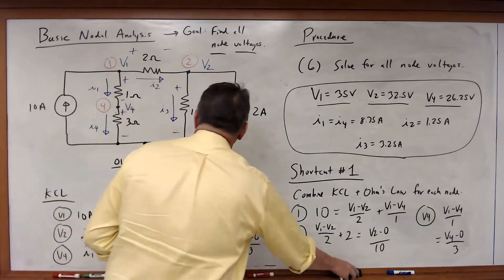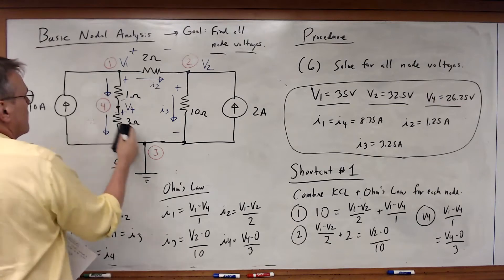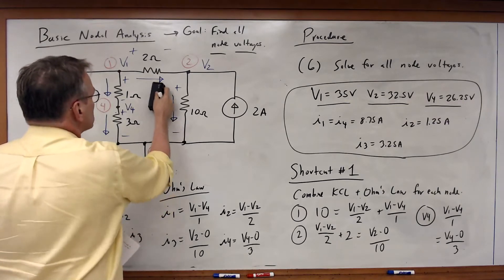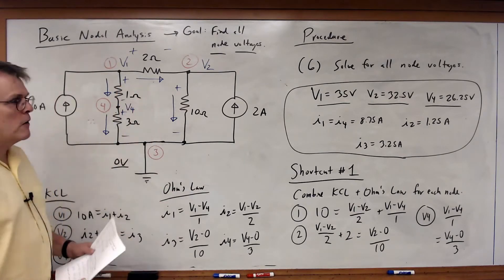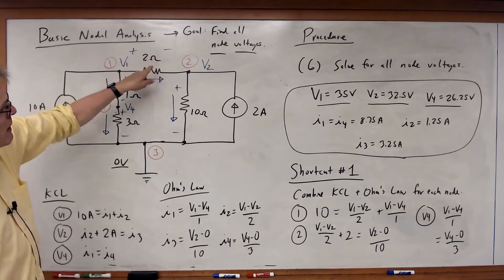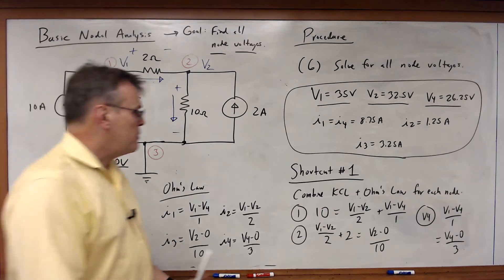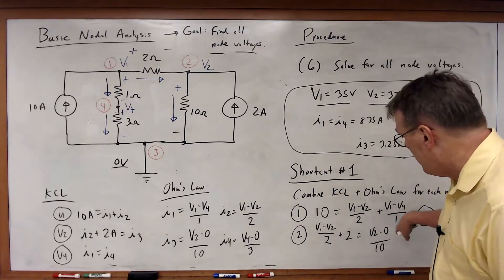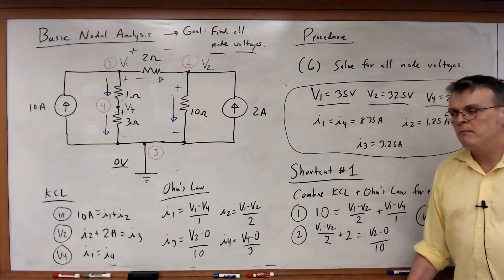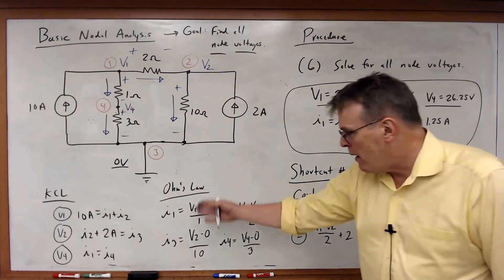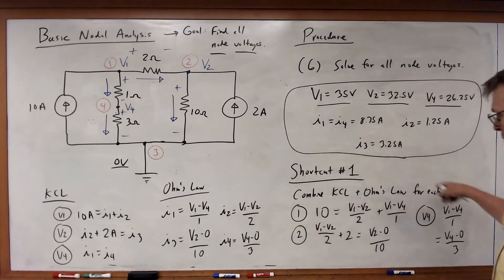Note that I did not even need to define the I1, I2, I3, and I4 current variables — they weren't even necessary. All you need to do is draw the direction of the current, draw the polarity of the voltage drop across the resistor, and then just write it with Ohm's Law. These three equations are really nothing more than the KCL equations with Ohm's Law substituted in. But why go to that extra effort? I don't need to know I1, I2, I3, and I4. I'm just trying to solve for the nodal voltages.